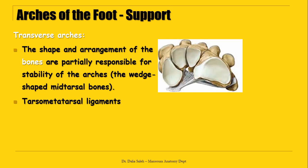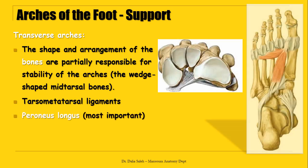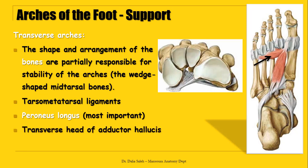These bones are held together by tarsometatarsal ligaments, but the most important factor that keeps this arch is the peroneus longus tendon, which crosses the sole of the foot from lateral to medial, always pulling the medial end of the arch towards the lateral side. It is also maintained by the tonic contraction of the transverse head of the adductor hallucis muscle.